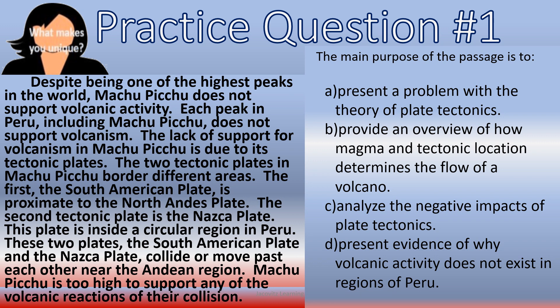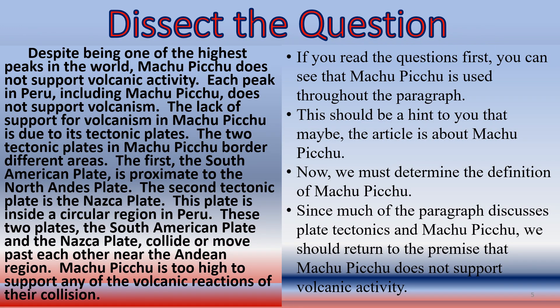These are some of the ways your mind has to actively think to get through these questions. If you read the questions first, you can see Machu Picchu is used throughout the paragraph — that's a hint that the article is about Machu Picchu. We must determine what Machu Picchu is. It doesn't directly state it; it just says it doesn't support volcanism and was formed by tectonic plates. It mentions the South American plate is proximate to the North Andes plate, really just talking about its location.